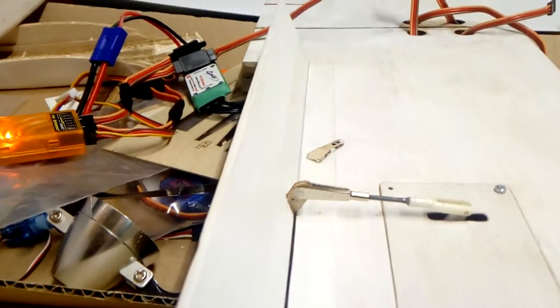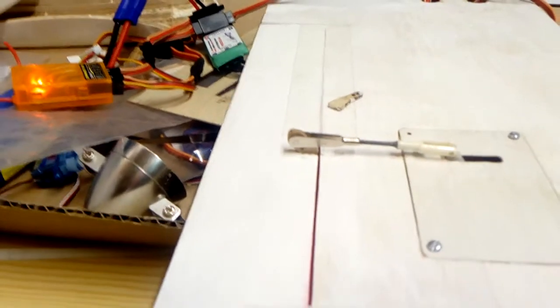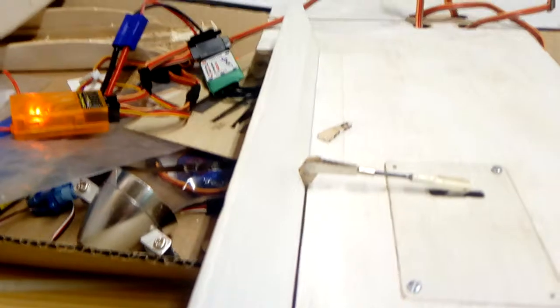This works a little bit better. Here we go. You can see the pushrods clear of the wing surface. A bit of screaming there from the servo, but that's okay. That's about 90 degrees.